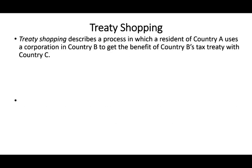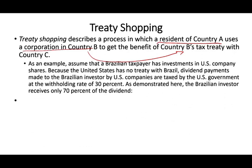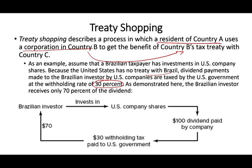Let's talk about treaty shopping, which is not as common as before but worth covering. Treaty shopping describes a process in which a resident of Country A uses a corporation in Country B to get the benefit of Country B's treaty with Country C. For example, assume a Brazilian taxpayer has an investment in the U.S. Because the U.S. has no treaty with Brazil, dividend payments to the Brazilian investor are withheld at 30%. So if they receive $100, the Brazilian investor would receive only $70.